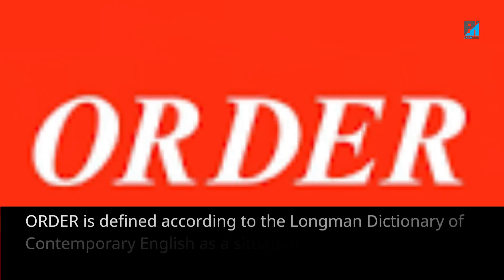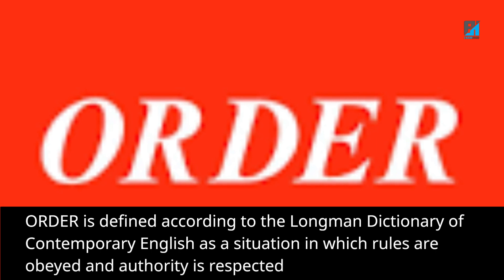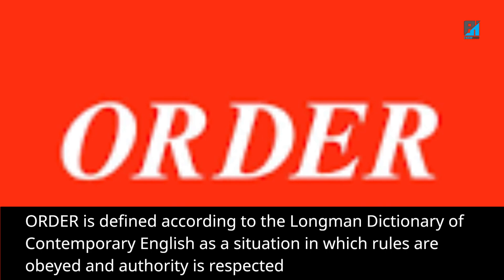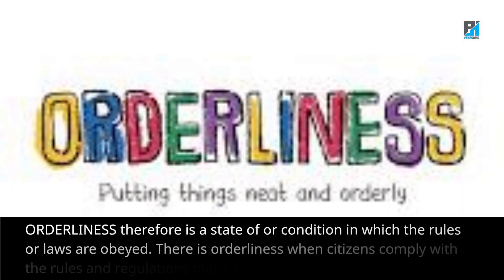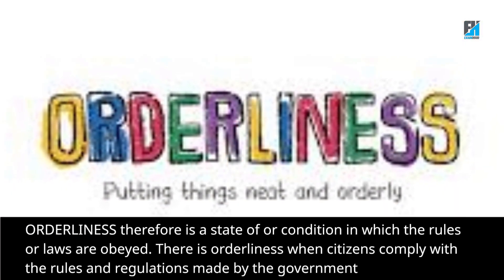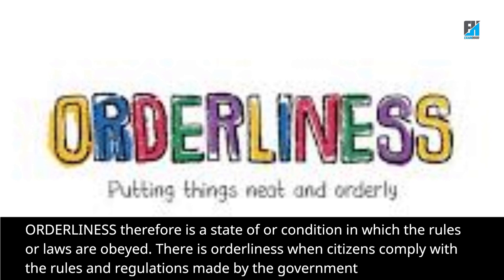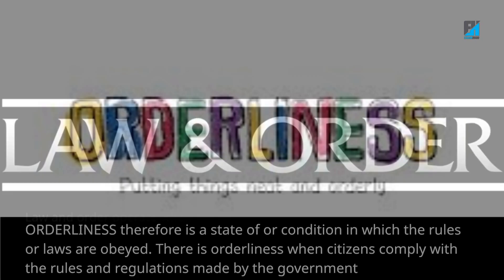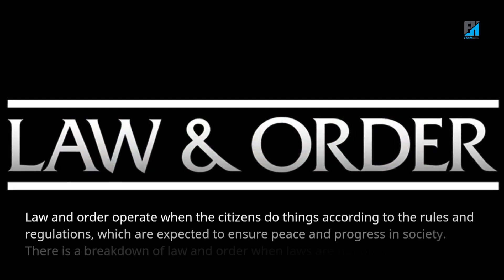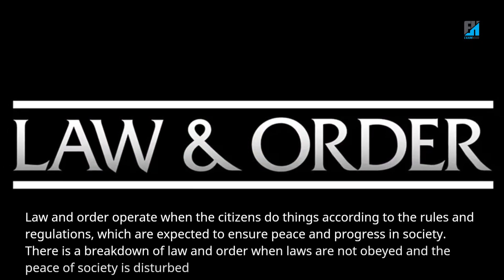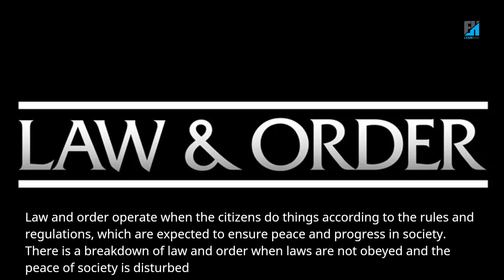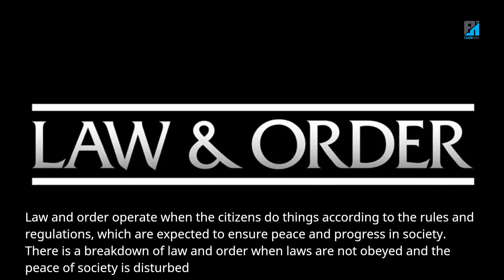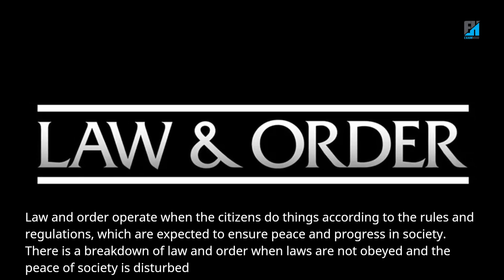Order is defined according to the Longman Dictionary of Contemporary English as a situation in which rules are obeyed and authority is respected. Orderliness therefore is a state or condition in which the rules or laws are obeyed. There is orderliness when citizens comply with the rules and regulations made by the government. Law and order operate when citizens do things according to the rules and regulations, which are expected to ensure peace and progress in society. There is a breakdown of law and order when laws are not obeyed and the peace of society is disturbed.